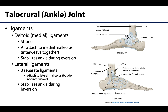Now looking at the ligaments of the talocrural joint, there are two sets — one on the medial side and one on the lateral side. Those on the medial side are referred to as the medial ligaments or, collectively, the deltoid ligaments, named for their delta shape. These are by far the more robust and stronger of the two sets. All of them attach on the medial malleolus of the tibia, interweaving there before spreading out to their respective bones.